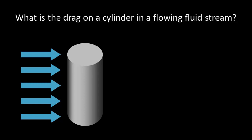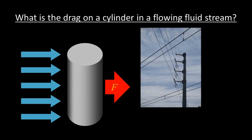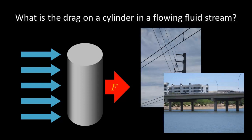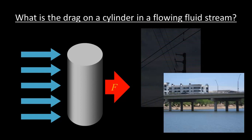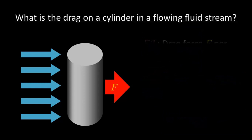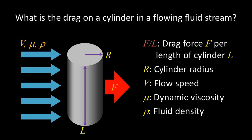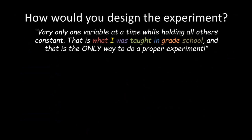But what if the problem is more complicated? Suppose you're given this basic fluid dynamics problem. What is the drag force experienced by a cylinder embedded in a flowing fluid stream? This would be like the force on a suspended power line in the wind, or the force on a bridge support in a river. Let's even simplify the problem further and restrict the scenario to incompressible fluids like water, and assume that the surface of the cylinder is perfectly smooth.